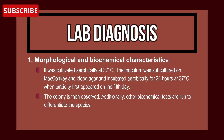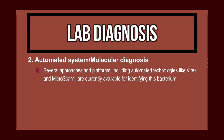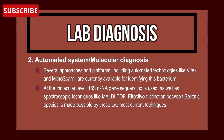When turbidity first appears, the colony is observed and additional biochemical tests are run to differentiate the species. Number two: automated system and molecular diagnosis. Automated technologies like VITEK and MicroScan are frequently used for identifying this bacterium. At the molecular level, 16S ribosomal RNA gene sequencing and spectroscopic techniques such as MALDI-TOF enable effective distinction between Serratia species.